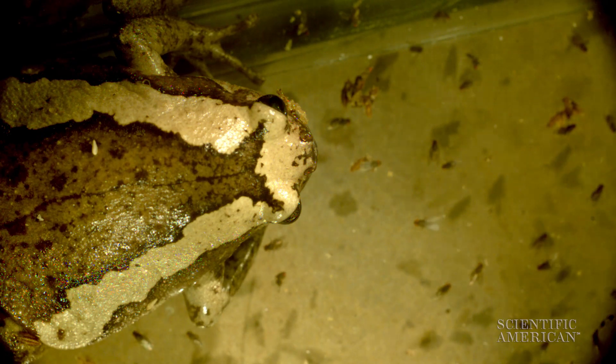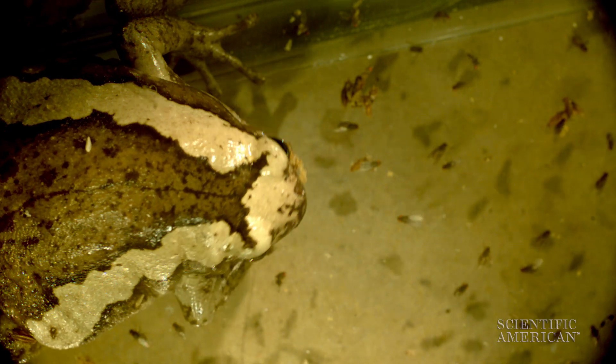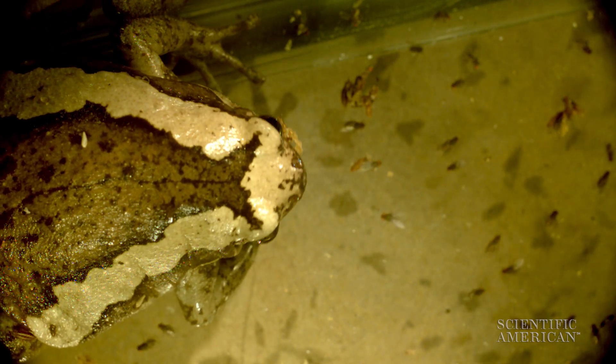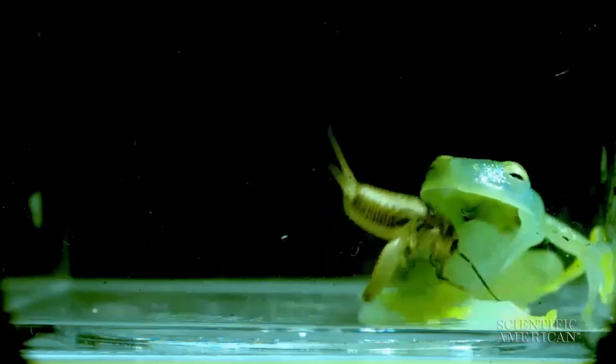It's that combination of the soft tongue and the sticky saliva that lets frogs scoop up their prey in an instant. Of course, not even super spit can help a frog if it bites off more than it can chew. For Scientific American, I'm Lydia Chain.